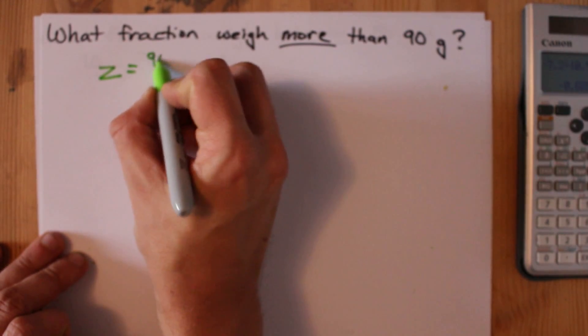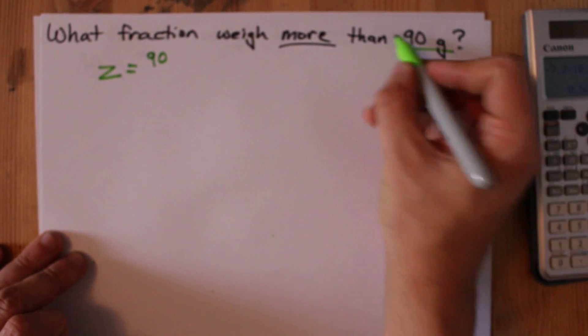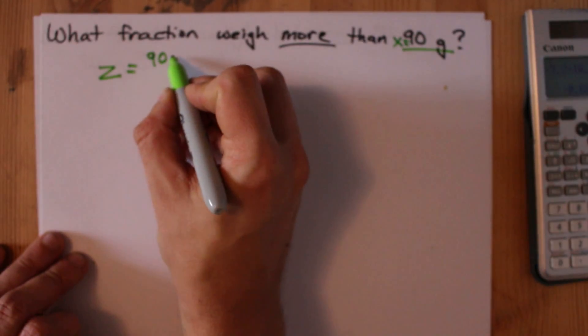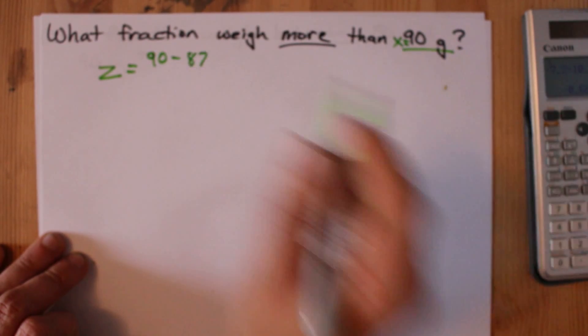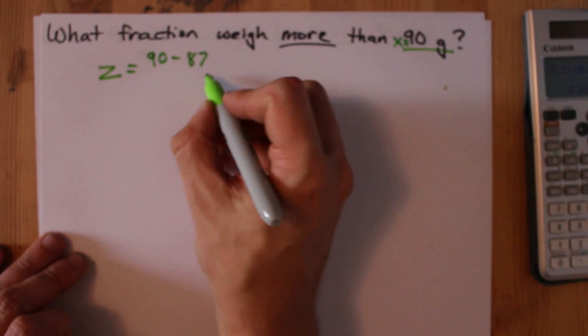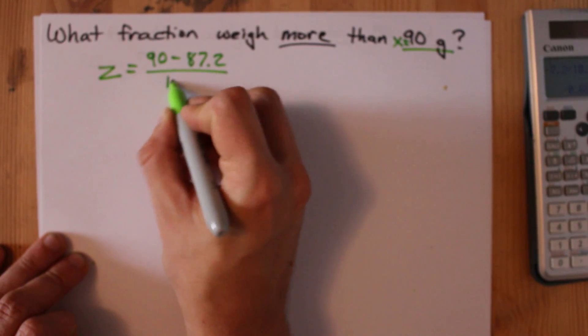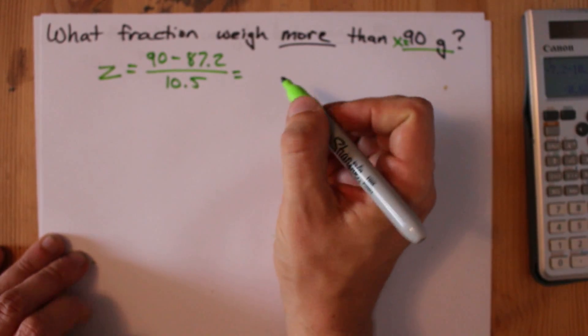The z here is 90, because that's the mass we're asked about. That's our x. The mean is still the same, 87.2. We're going to divide it by 10.5, just like before.